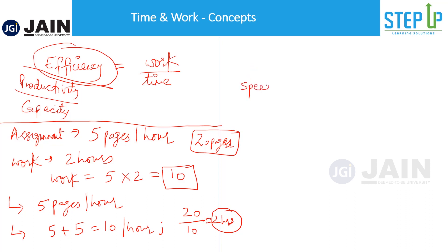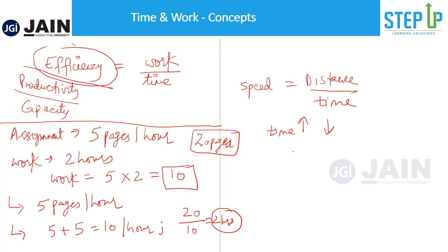Can you draw an analogy to the concept we studied previously? Speed is nothing but distance divided by time. This is similar — this is also your rate of doing work, and work is nothing but the distance. Using the concept of proportionality, you will also realize that for constant work, time and efficiency have an inverse ratio. That means if the work is constant and you take more time, your efficiency is less. If you take less time, your efficiency is more. This is the only concept we'll use to solve the questions going ahead.